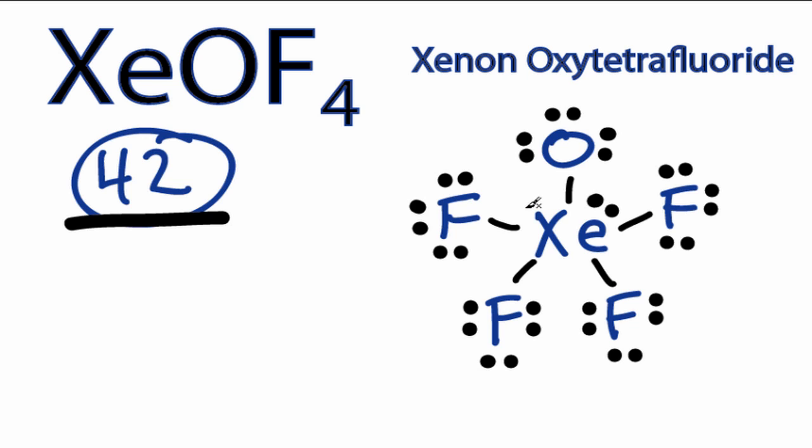When you calculate the formal charges, you'll see that the oxygen has a formal charge of negative 1, and the xenon has a formal charge of plus 1.